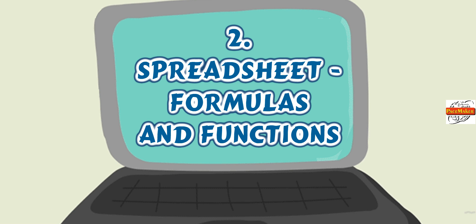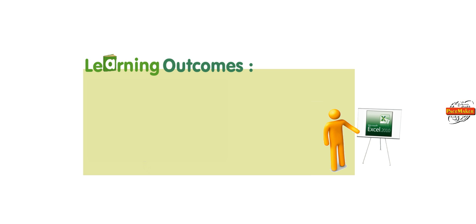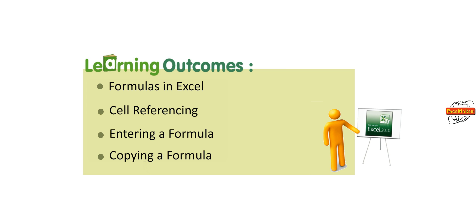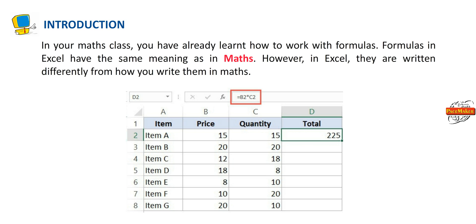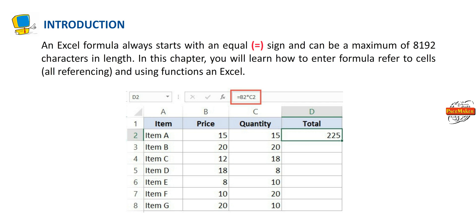Chapter 2: Spreadsheet Formulas and Functions. Learning outcomes include formulas in Excel, cell referencing, entering a formula, copying a formula, text formulas, error results, and functions in Excel 2010, AutoSum, and managing worksheets. In your maths class you have already learnt how to work with formulas. Formulas in Excel have the same meaning as in maths. However, in Excel they are written differently. An Excel formula always starts with an equal to sign and can be a maximum of 8192 characters in length.